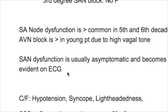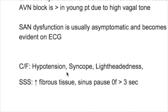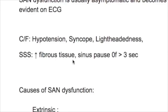The clinical features of SA node dysfunction include hypotension, syncope, and lightheadedness. The cause of sick sinus syndrome involves increased fibrous tissue, and the sinus pause is of more than 3 seconds — because usually athletes have a sinus pause of up to 3 seconds.